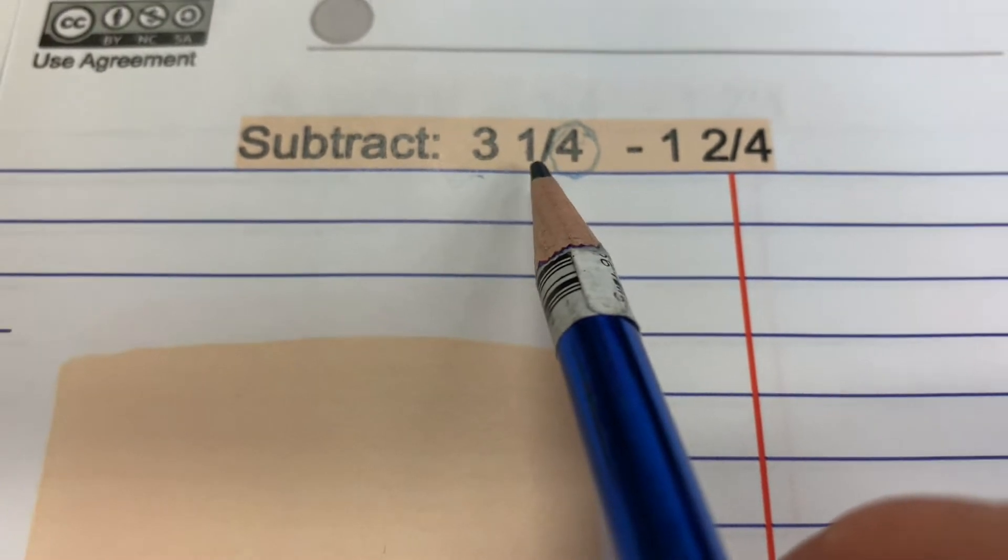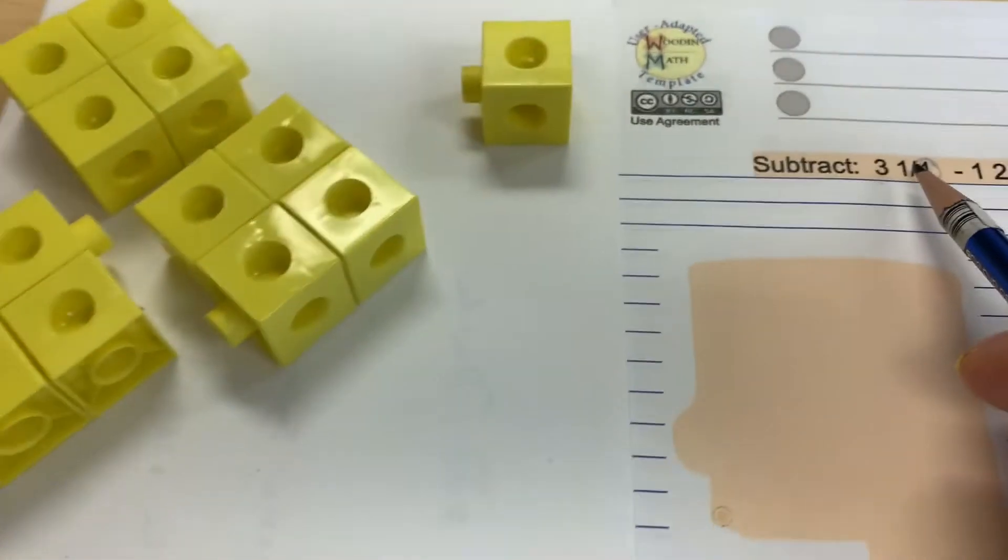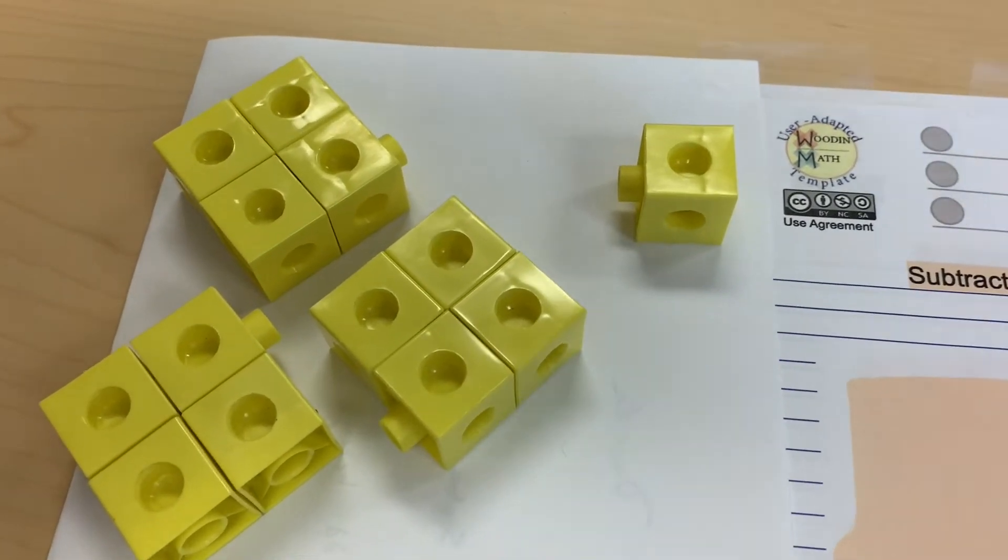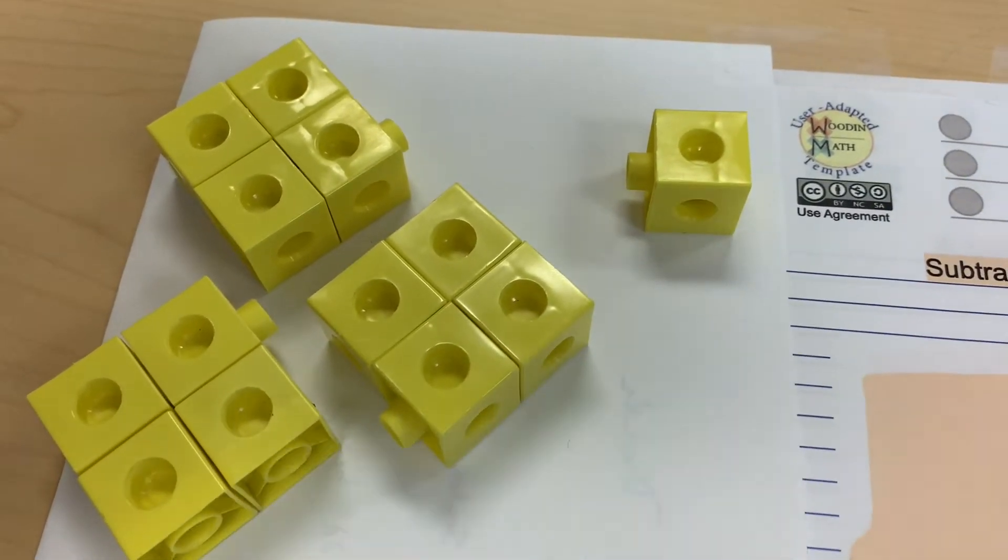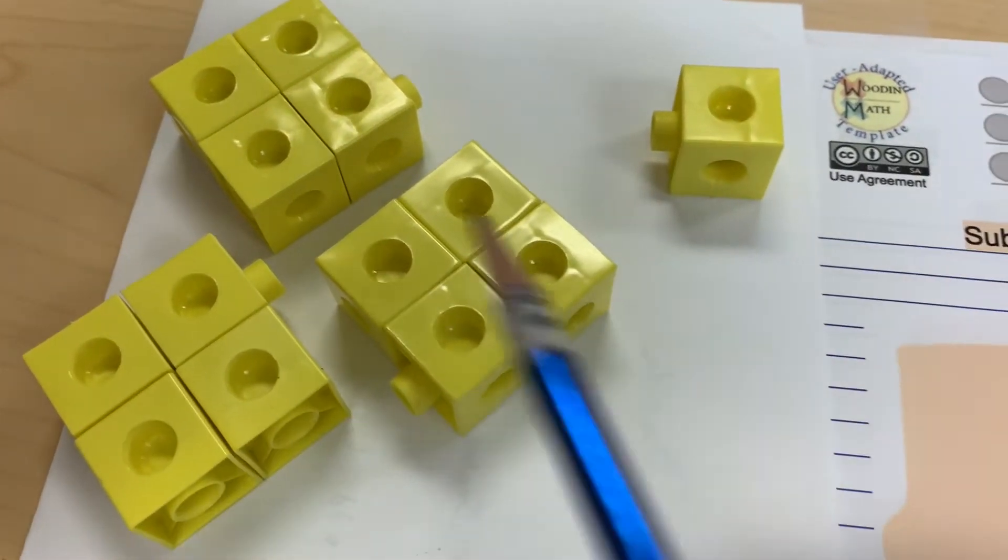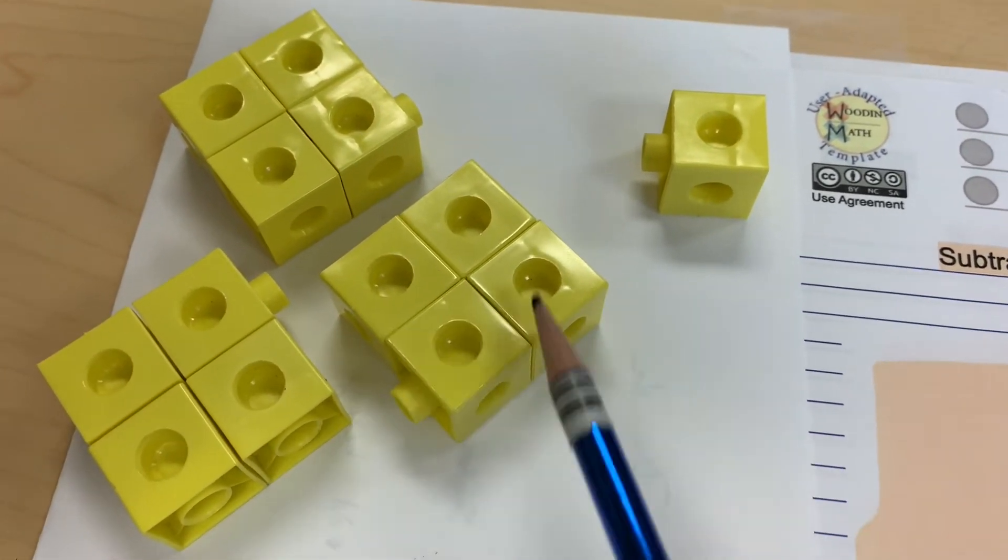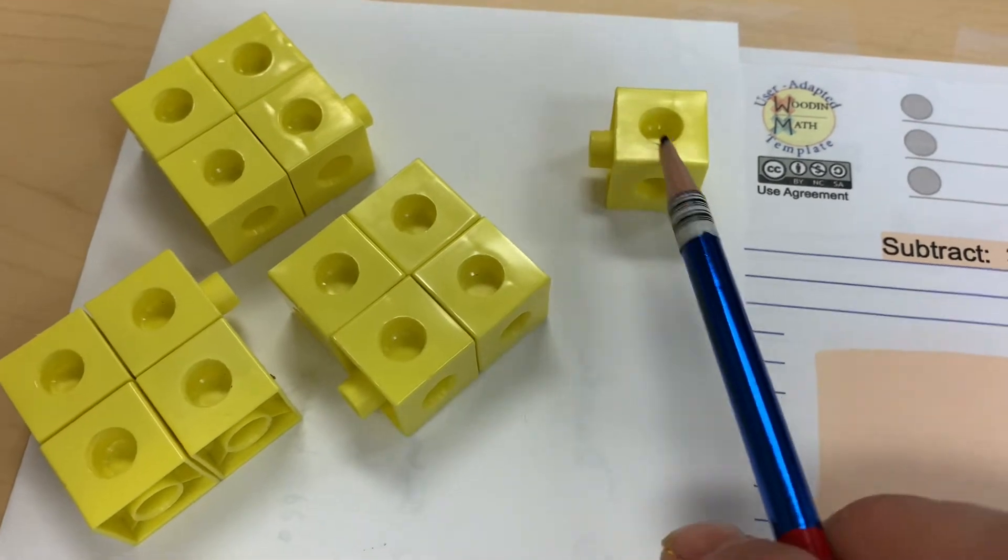So I'm going to make a model of that. You can use any type of model that you want to. I'm going to use these snap cubes. So anyway, that's a whole car and I have three of them. Takes four to make a whole car, and then I have one additional one.